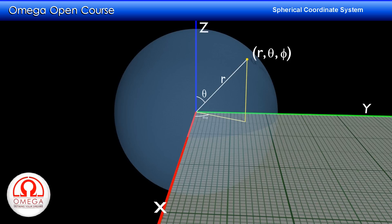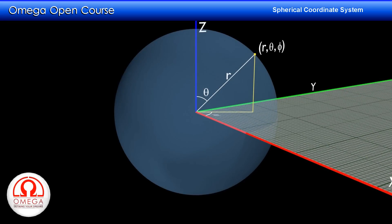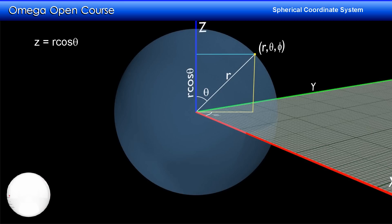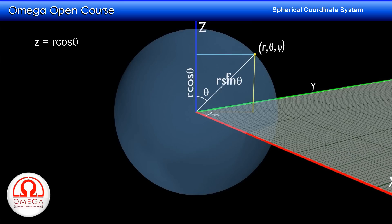Now let us convert these spherical coordinates into Cartesian coordinates. From the point, draw a line perpendicular to the z-axis. Since the radius makes an angle theta with the z-axis, the distance of the point where this perpendicular meets the z-axis from the origin is r cos theta. This distance is the z-coordinate of the point in the Cartesian coordinate system. The length of the perpendicular is r sin theta, and therefore the length of the line from the origin to the foot of the perpendicular on the xy plane is also r sin theta.